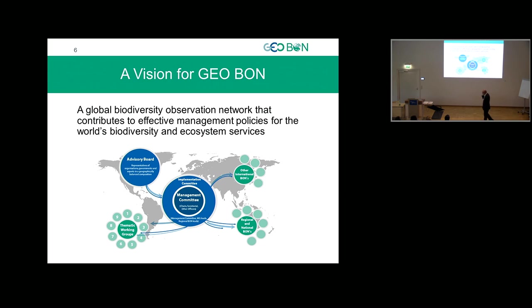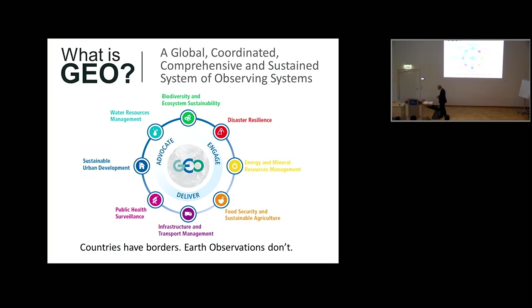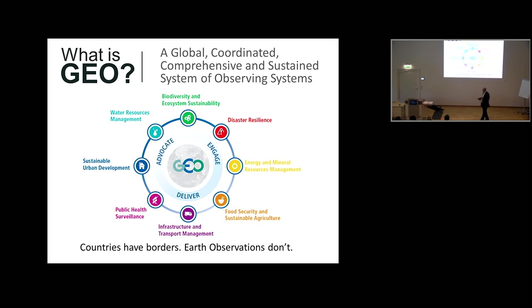This is why GeoBON is needed. GeoBON is the idea that we could develop a global biodiversity observation network contributing to the effective management of biodiversity and ecosystem services on Earth. GeoBON is part of GEO, an intergovernmental organization where around 80 governments worldwide have become members to develop collaboration in Earth observations across countries — because countries have borders, but Earth's observations do not.